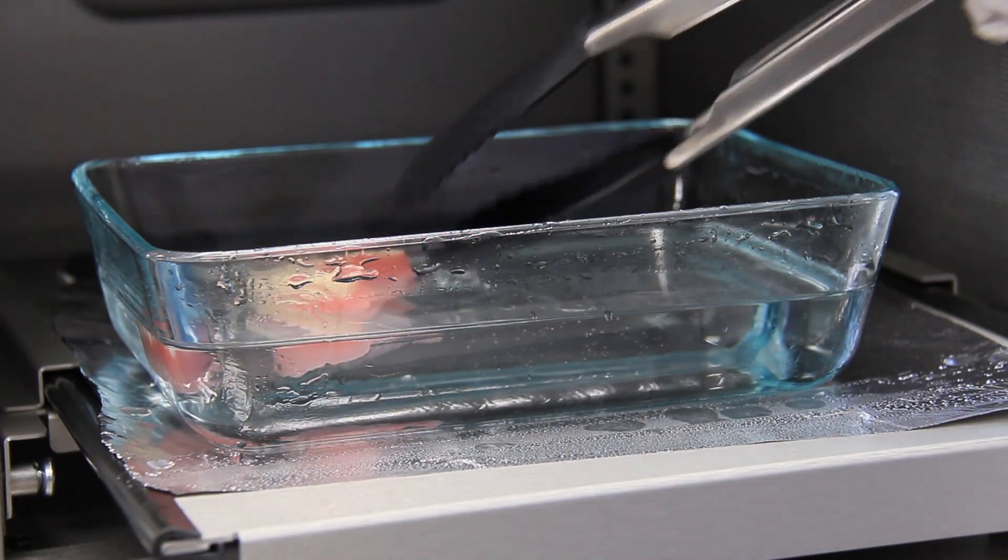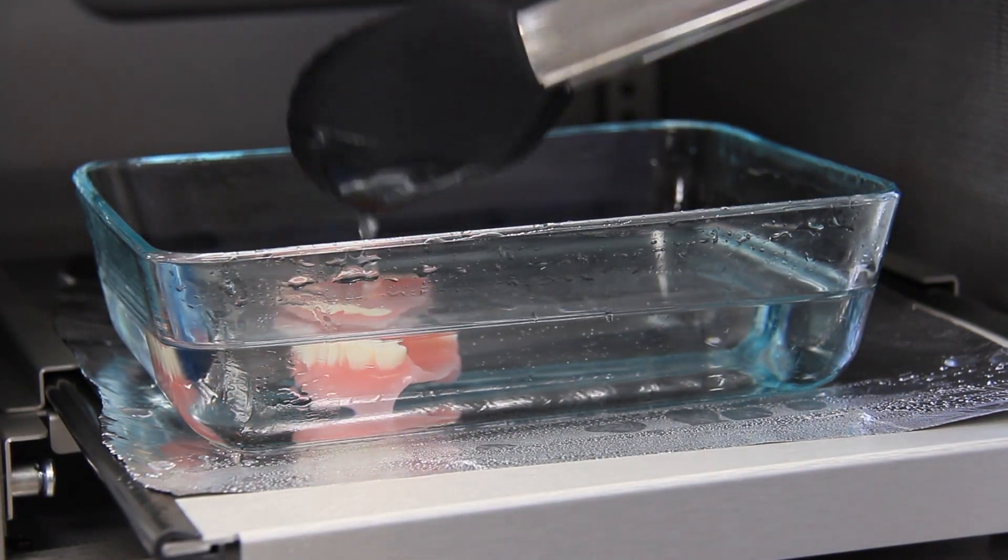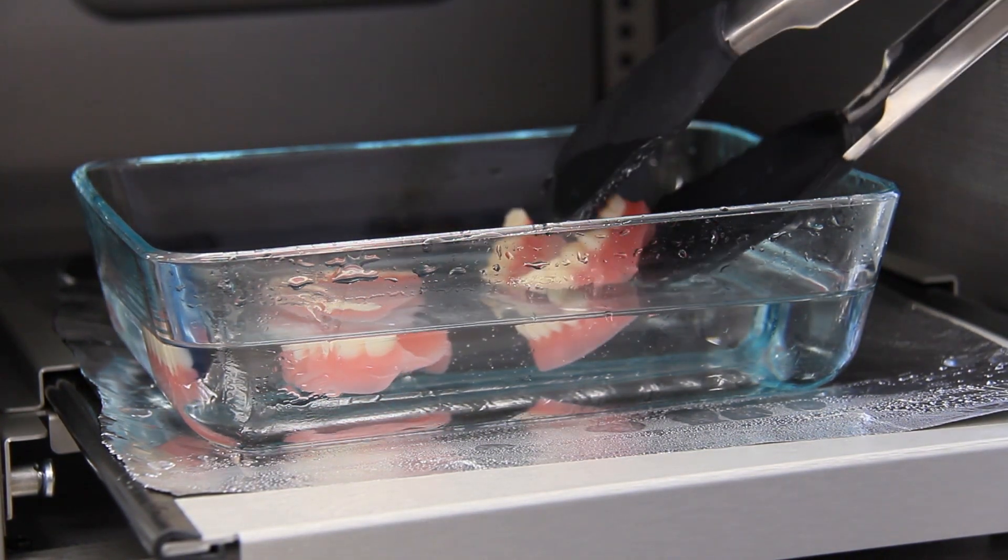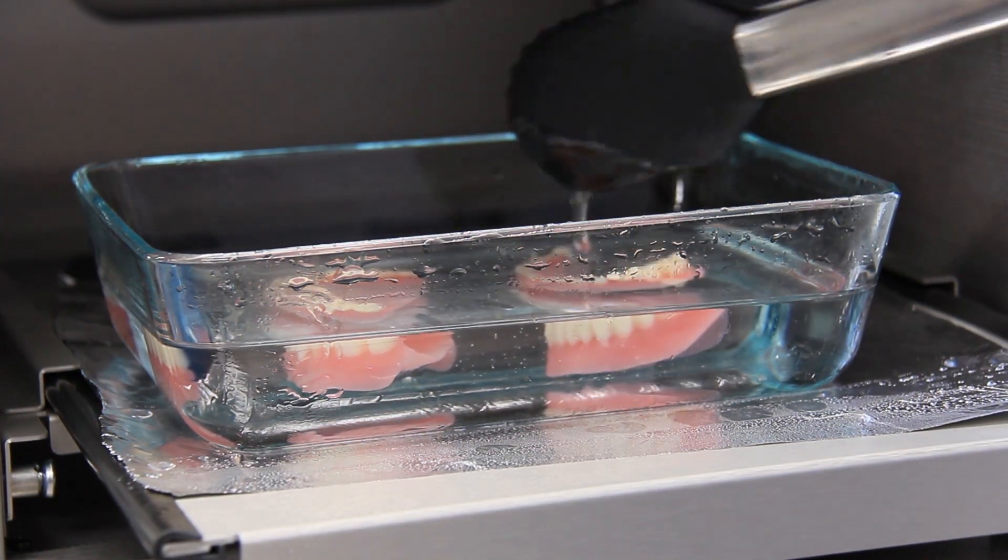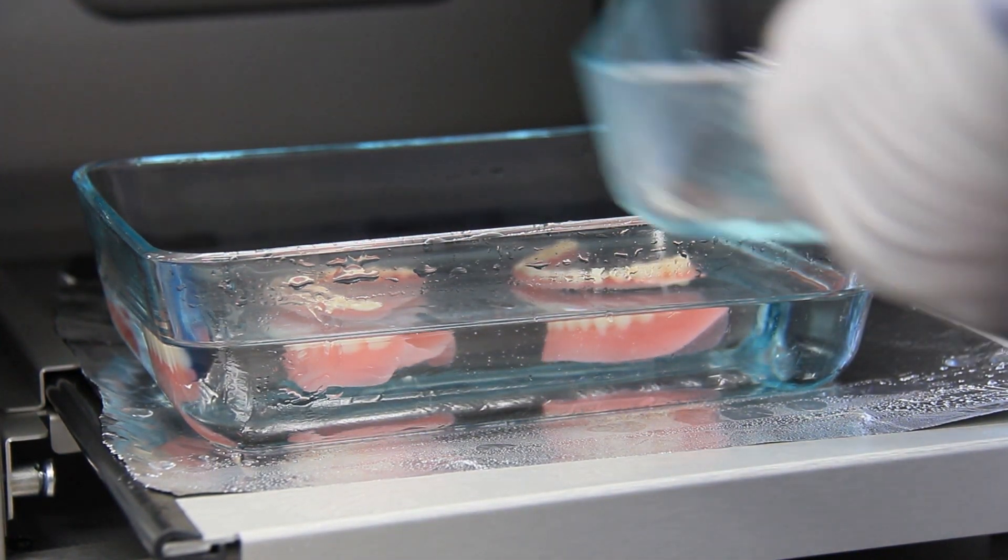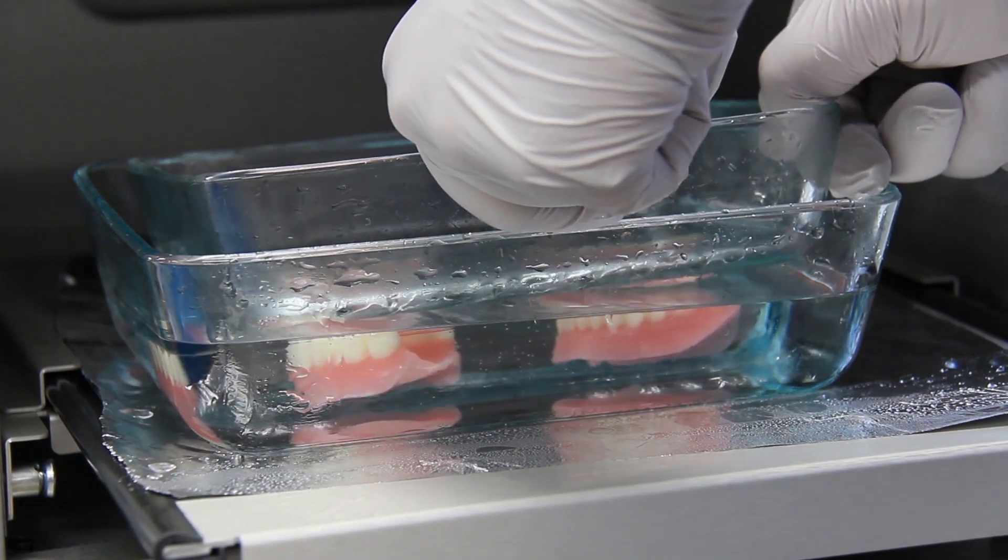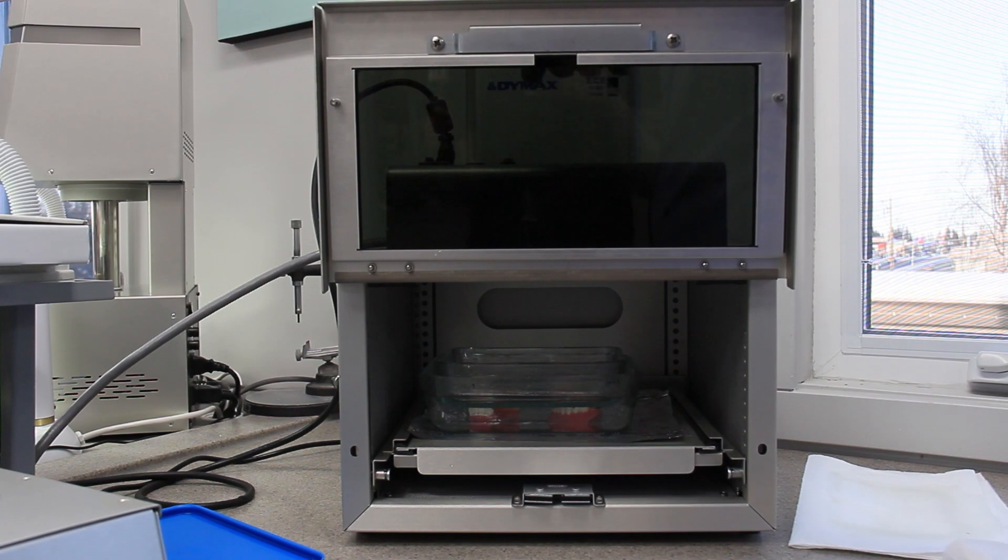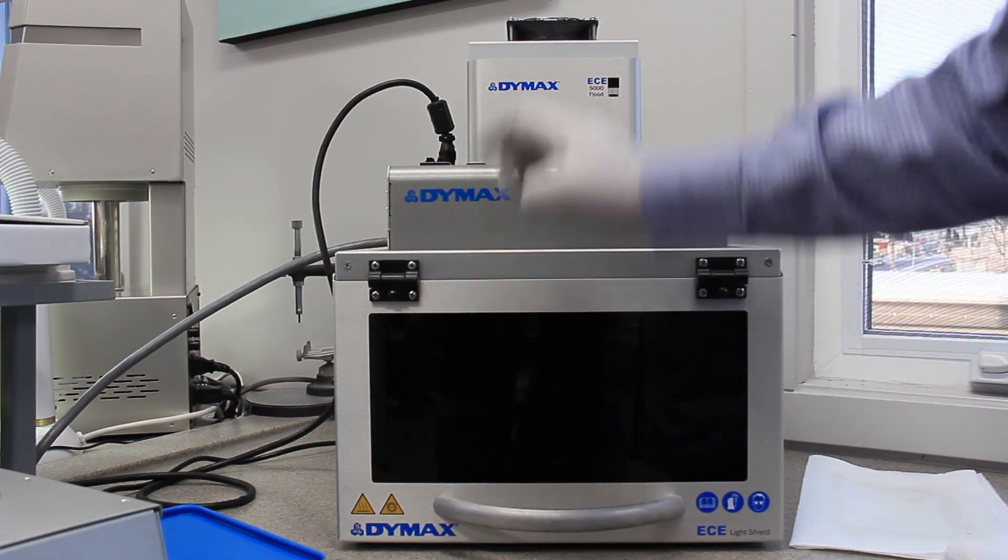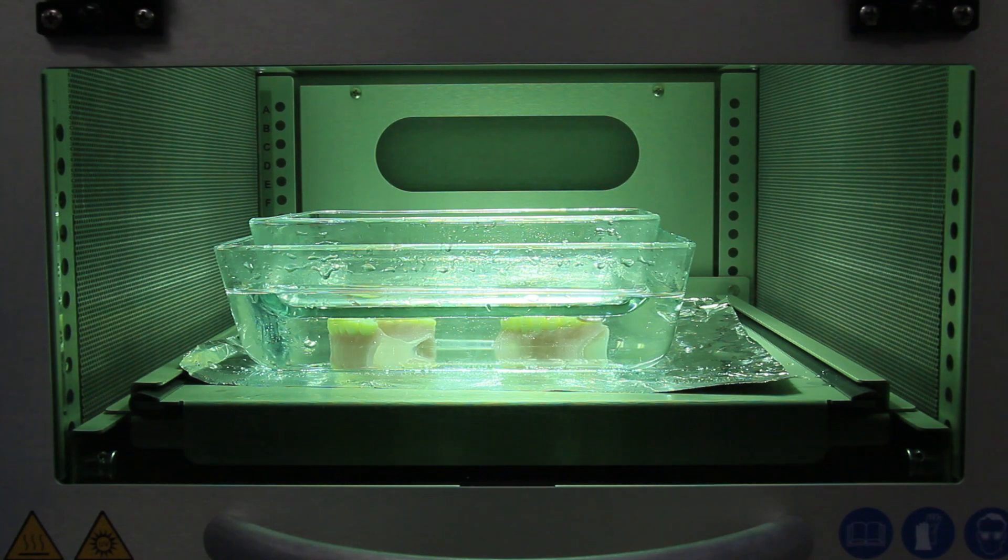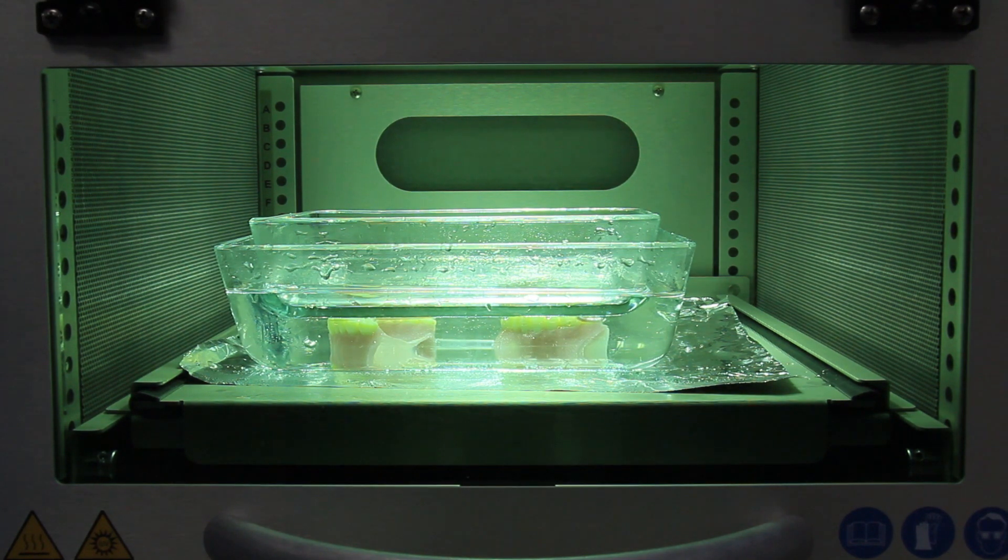Next, the dentures must go through a final curing process. This is achieved with a very powerful ultraviolet light. During the curing process, the dentures are submerged in a hot glycerol bath. The heat from the bath will help the resins to cure fully, while the glycerol prevents oxygen from reaching the surface of the dentures, which might hinder the curing process. This final cure ensures that the acrylic resin is fully polymerized and safe to use in the mouth.